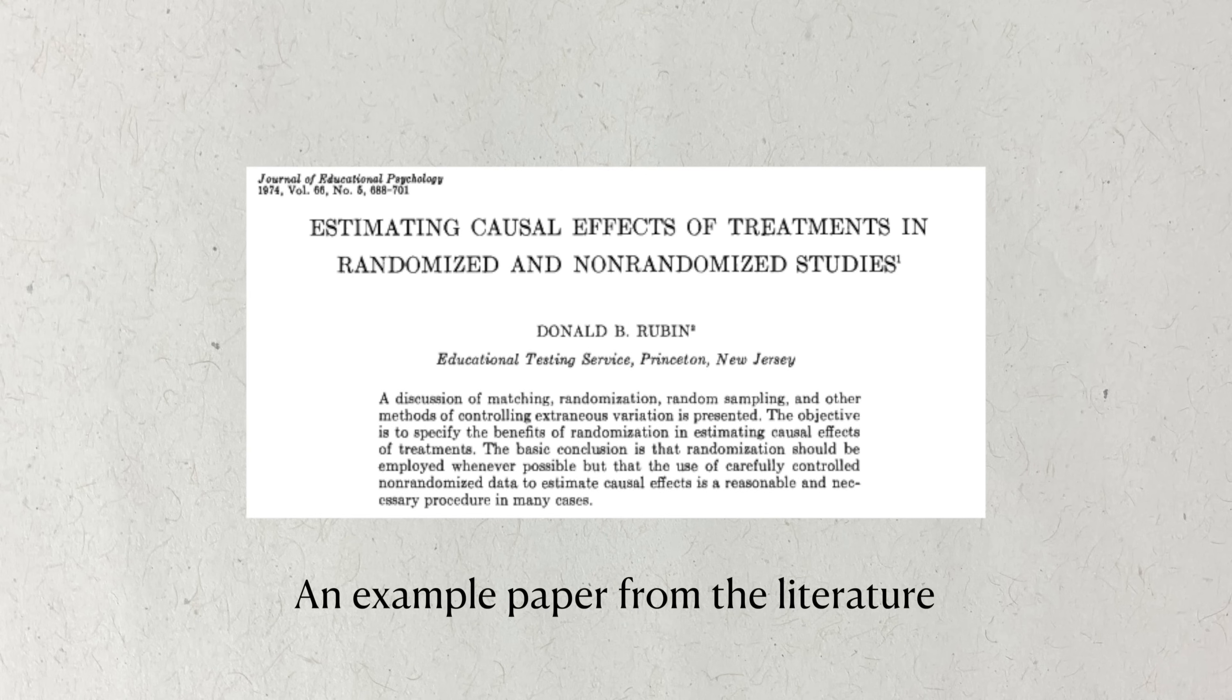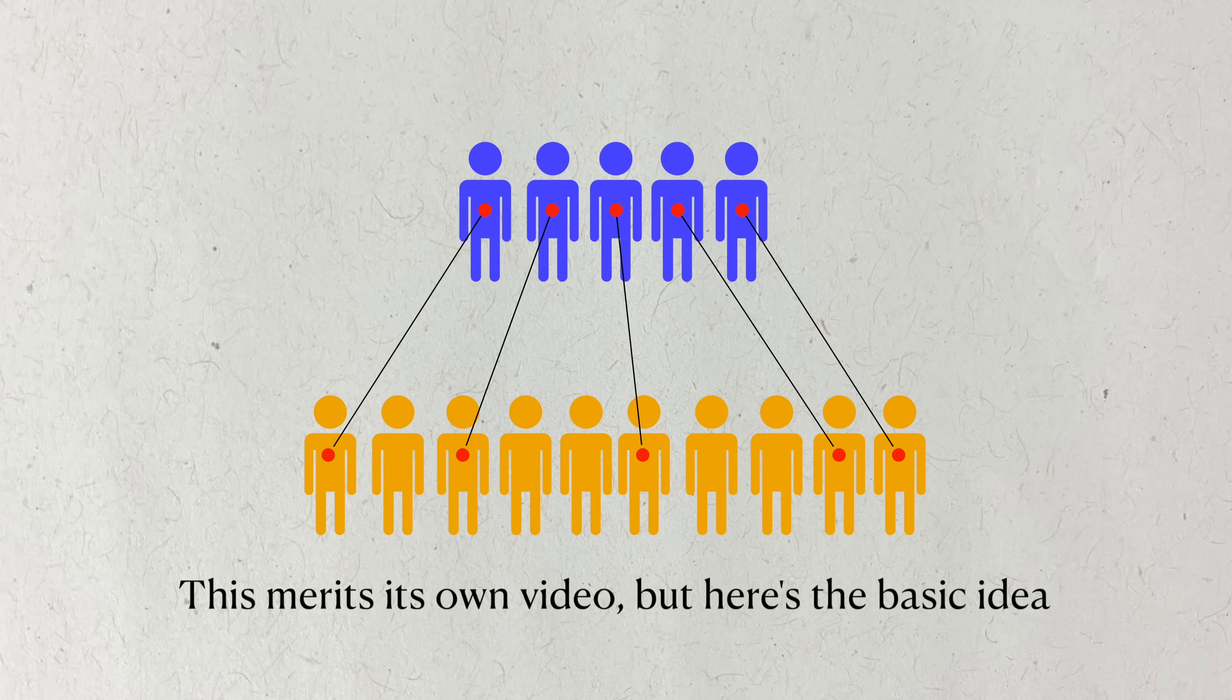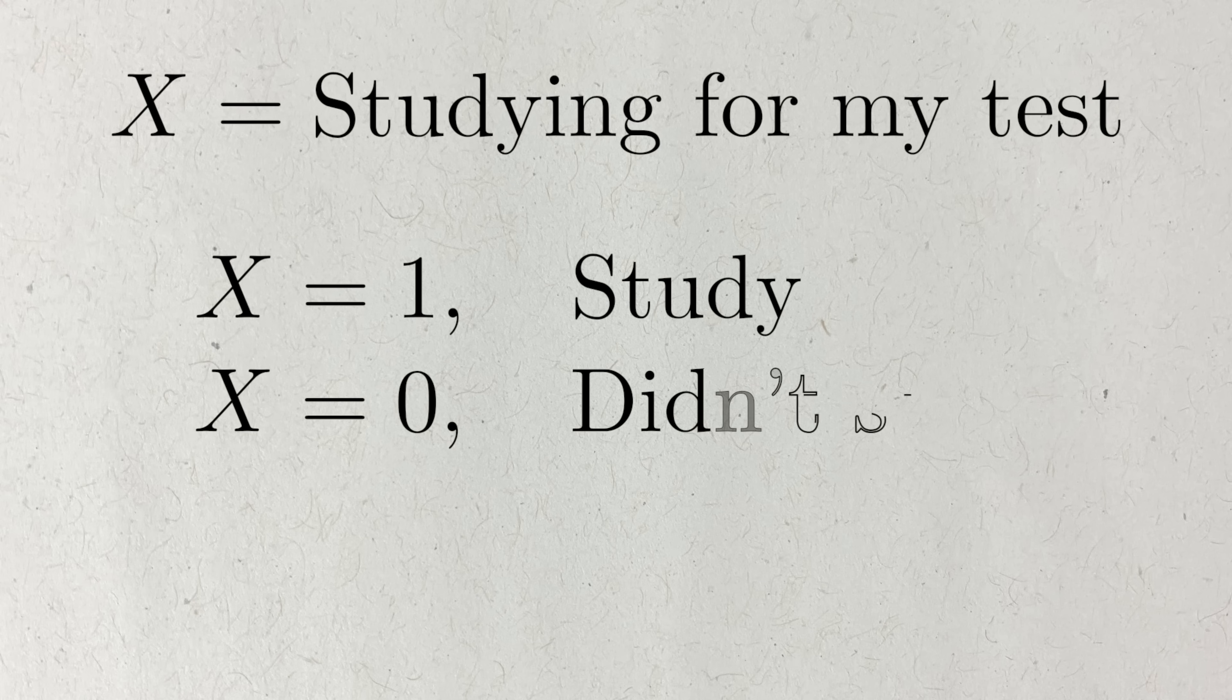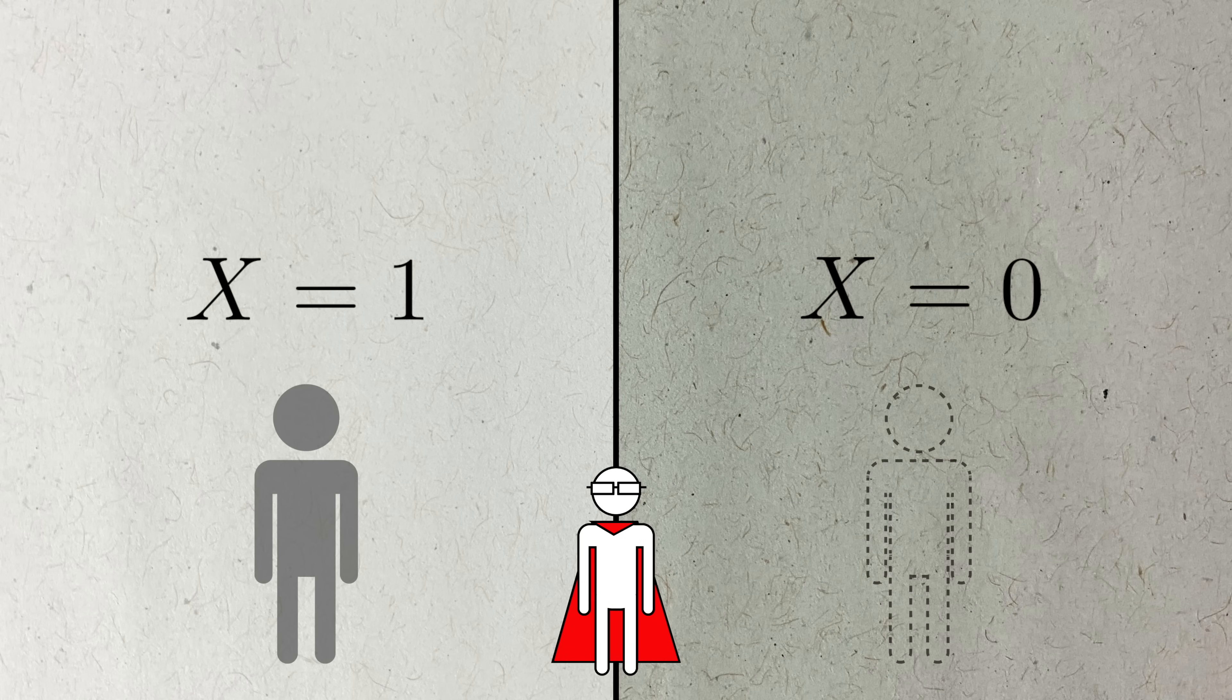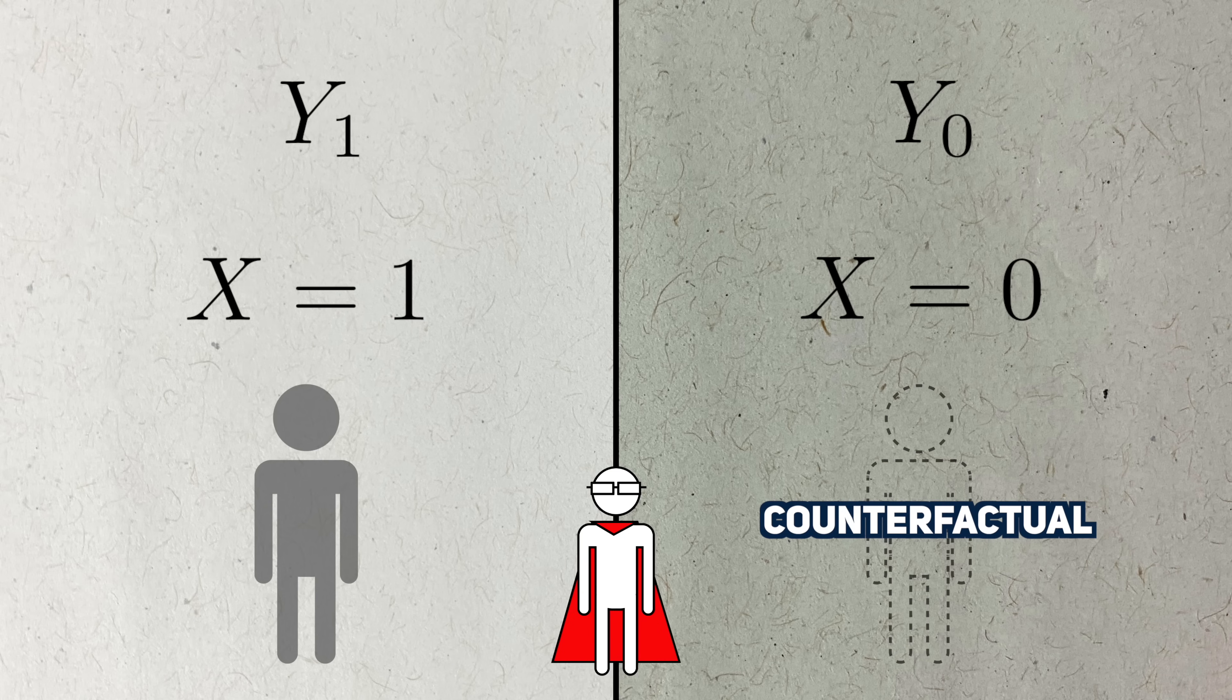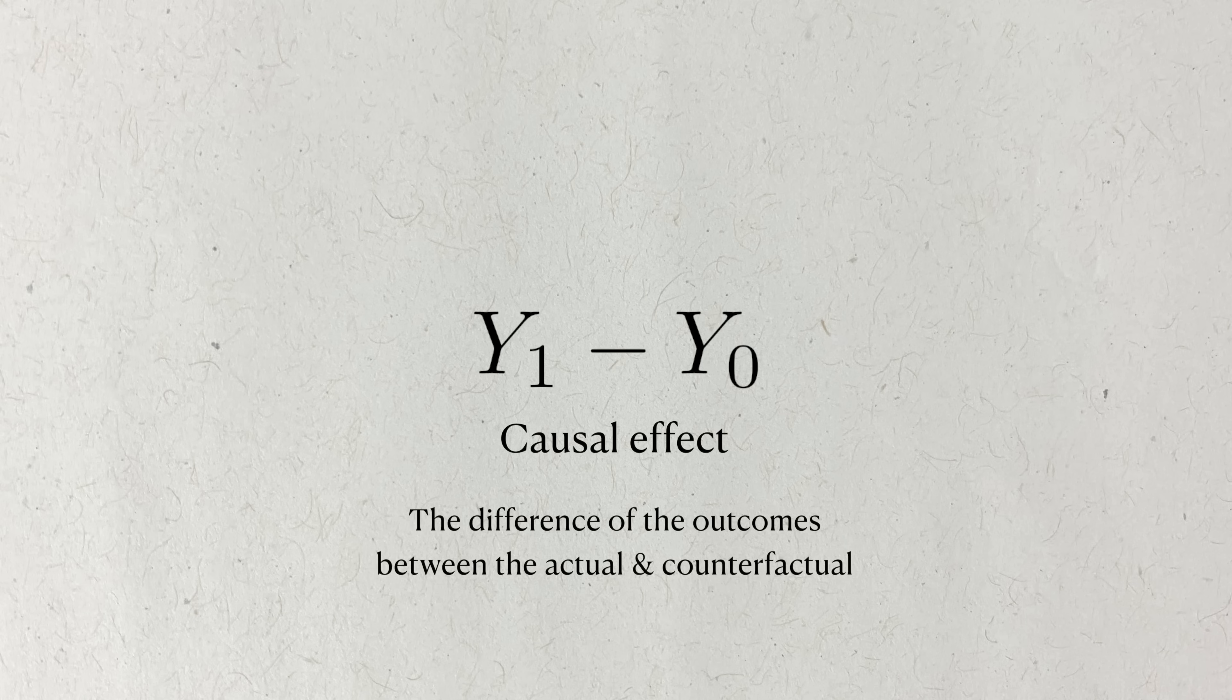This was until counterfactual causal inference came onto the scene. This framework allows us to take observational data and make adjustments in a way that gets us closer to causal statements. Let's consider a world where I have an upcoming test. I can choose to study a bit more, or I can choose not to. In this reality, I choose to study, and I get some score on the test later. I'll denote this as Y sub 1. If a supernatural statistician wanted to know if this decision caused the change in my score, then they would have to examine another reality. They would have to find the reality where I didn't choose to study, and measured the test score of that version of me who didn't study. I'll call that outcome Y sub 0. The only difference between these two versions of me is that I chose to study in one, but not in another. This unobserved version of myself is called the counterfactual, because this version of me is counter to what actually or factually happened. Then, the causal effect of me studying on my test score is the difference between Y sub 1 and Y sub 0.